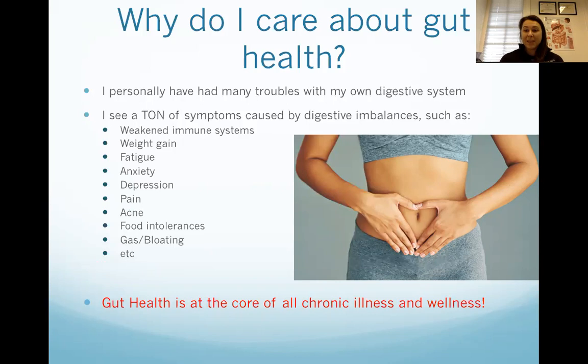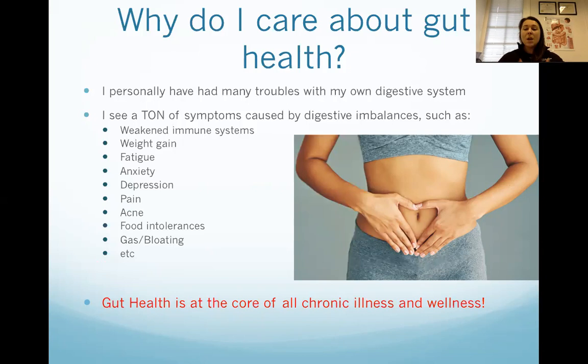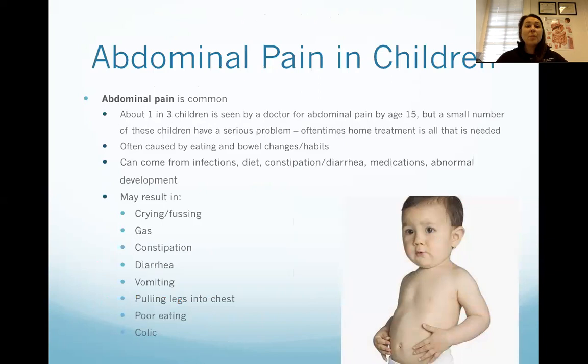Remember, 70% of your immune system is in your gut. A new fact today is that we have a second nervous system in our gut — we have our central nervous system in the brain and an enteric nervous system in the gut. There are 500 million neurons in the gut, compared to about 100 billion neurons in the adult human brain. That's why so many issues stem from the gut and go to other places in the body.